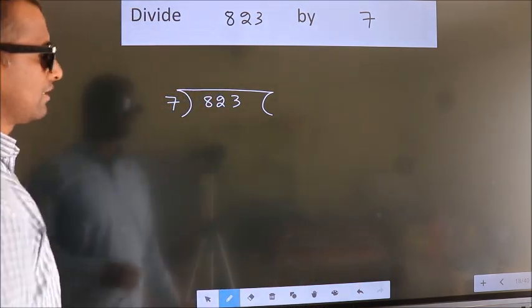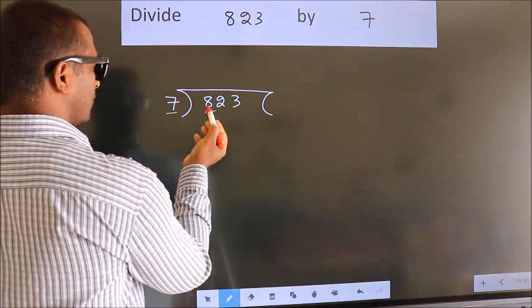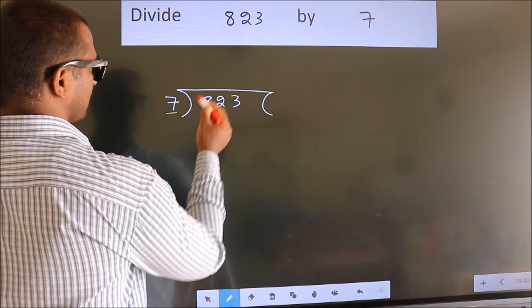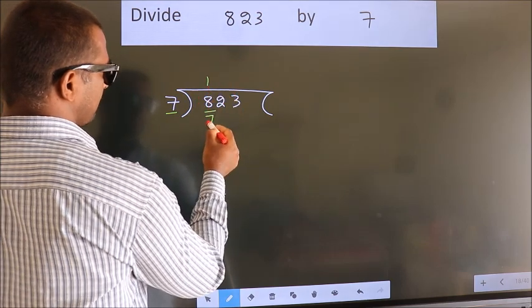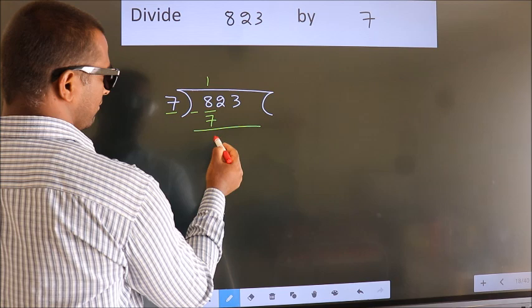Next. Here we have 8, here 7. A number close to 8 in the 7 table is 7. Now we should subtract. We get 1.